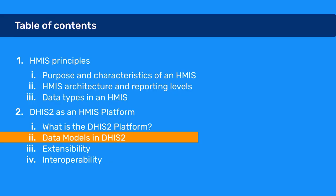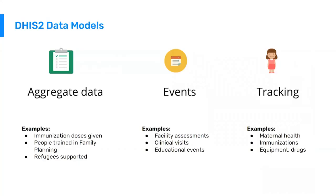In this section, we're going to cover the various data models in DHIS2. Previously, we talked about the three different data types that you can enter into an HMIS. Here, we're going to go into a little bit more detail about these three different data types and present them from a more technical data model perspective. Starting on the left side of the screen, the first one is aggregate data.